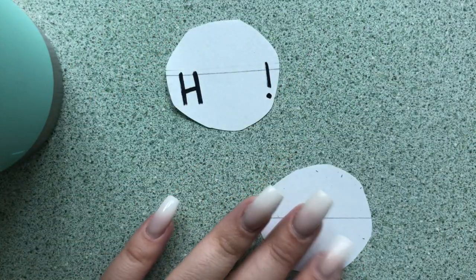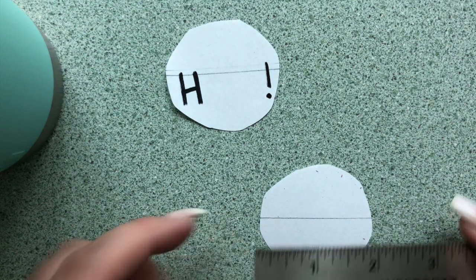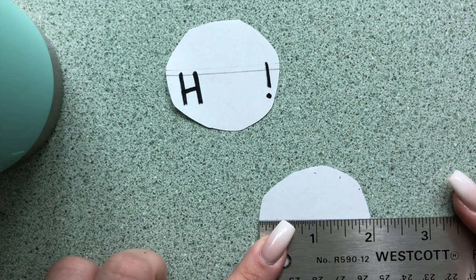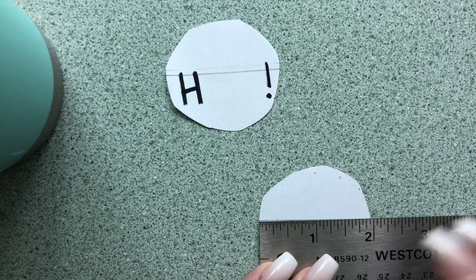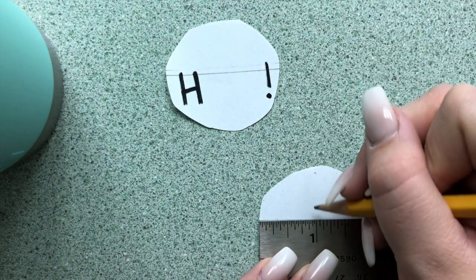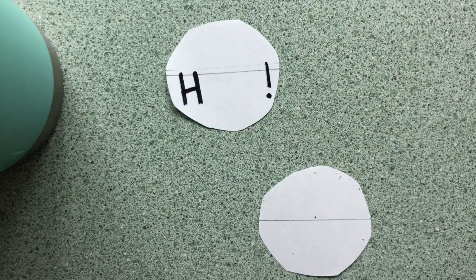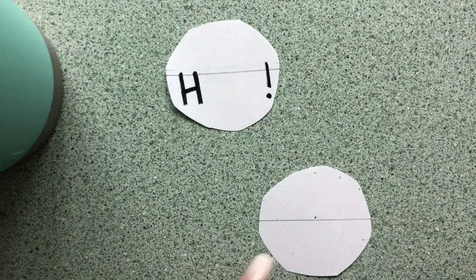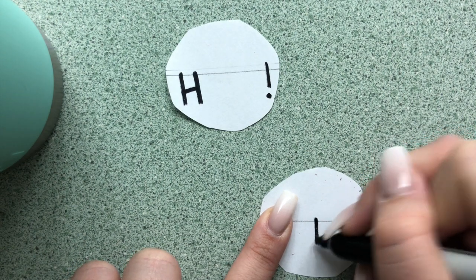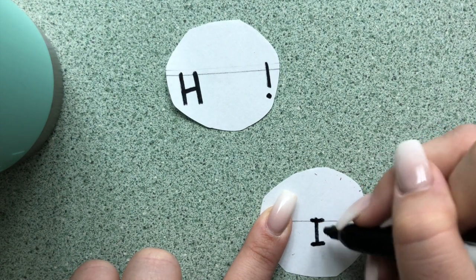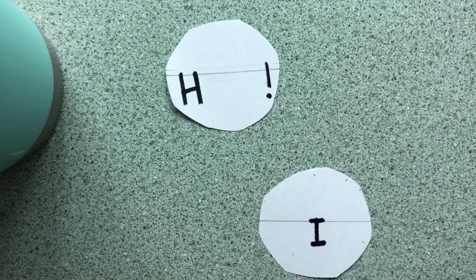Draw a center line across the middle of the second circle. Line up your ruler along that center line, and measure one inch from the right side, and mark that point with your pencil. Then use your marker to draw a large letter I at the one inch point on the second circle.